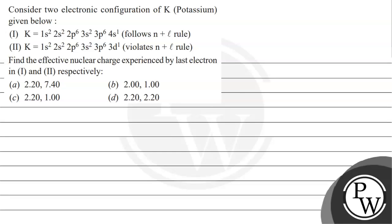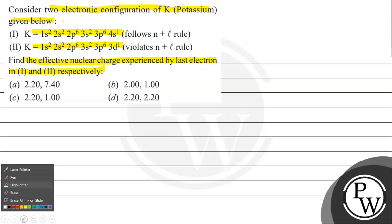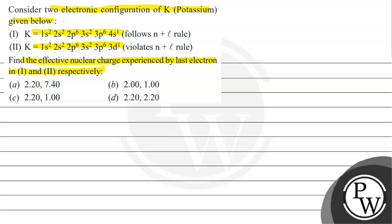Hello kids, let's read this question. Question says: consider two electronic configurations of potassium given below. Potassium's two electronic configurations are given. Find the effective nuclear charge experienced by the last electron in first and second respectively. Option A is 2.20 and 7.40. Option B is 2.00 and 1.00. Option C is 2.20 and 1.00. Option D is 2.20 and 2.20.